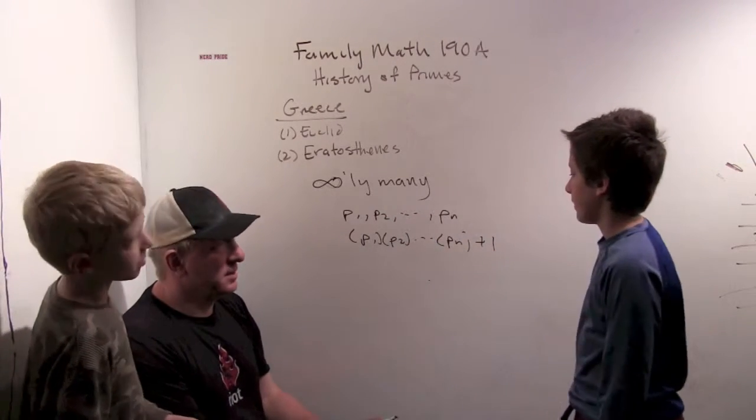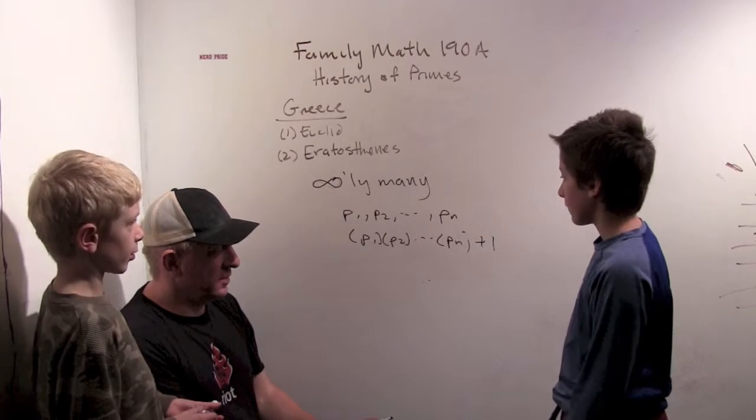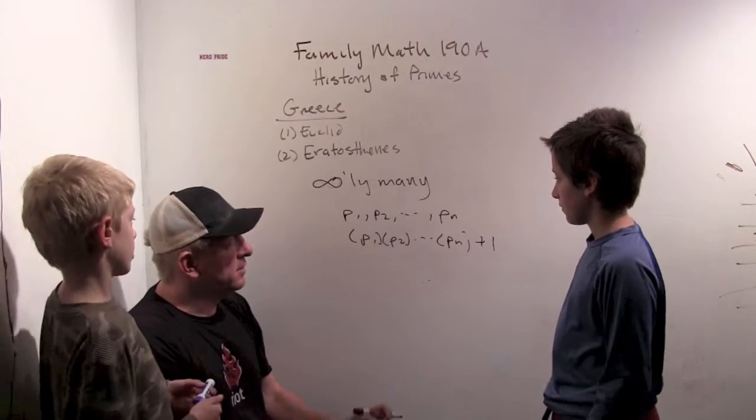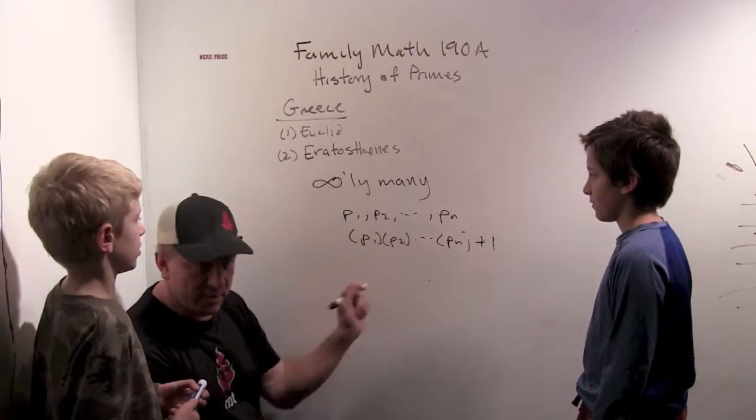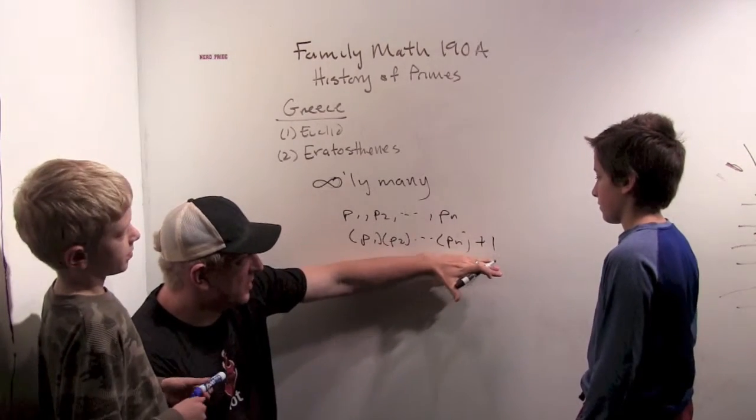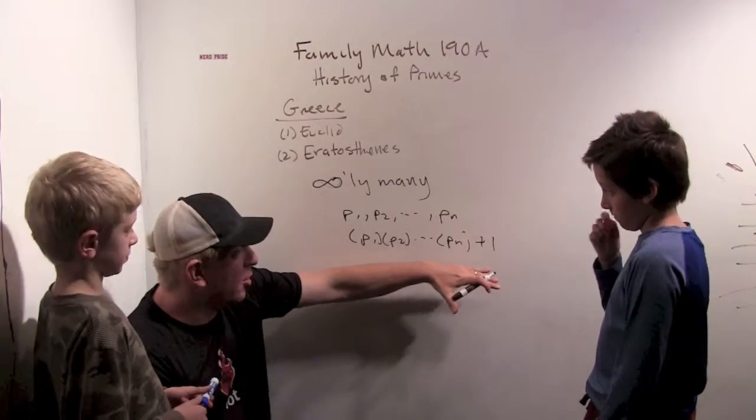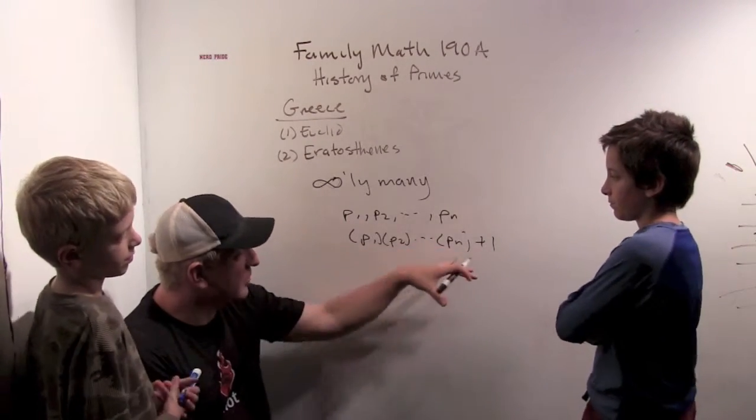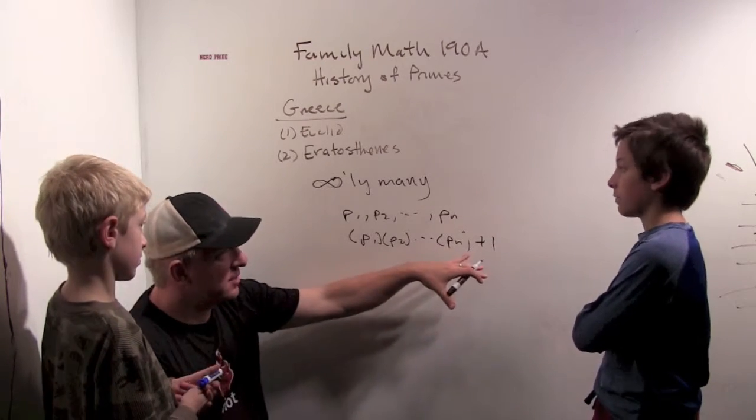So what does that mean? That means we just found a new prime. Either we found a new prime or there's some other prime that divides into this number. So either this number is prime, which means it has no divisors other than itself and one, or there's another prime that we missed that goes into this number.